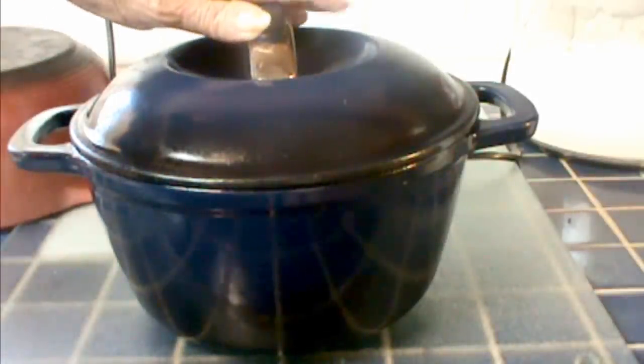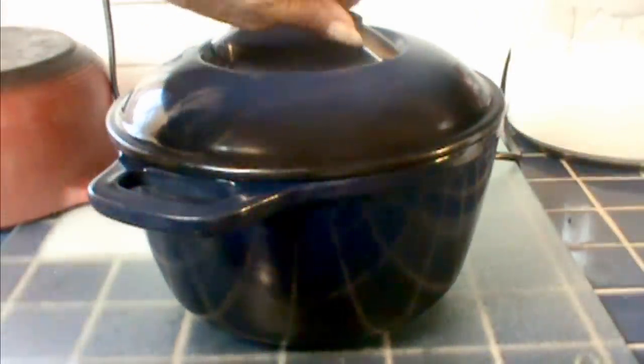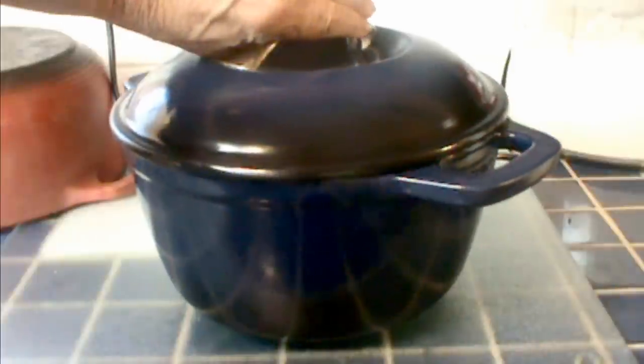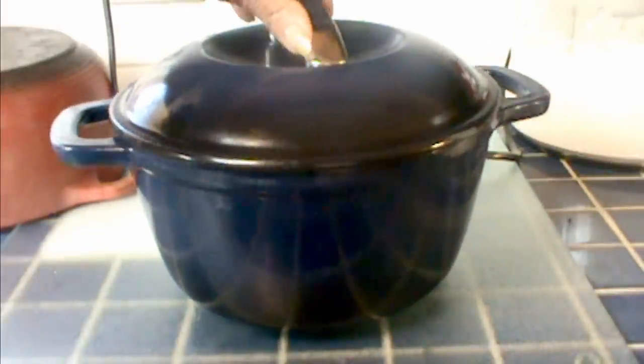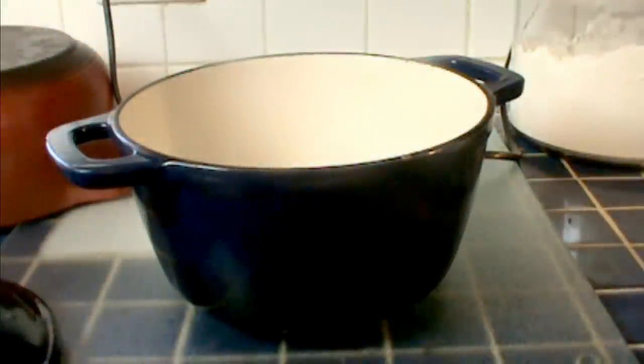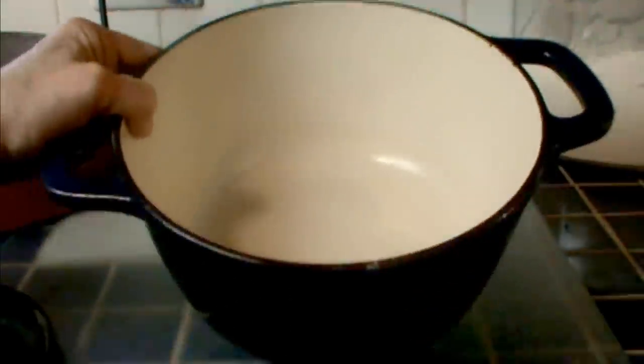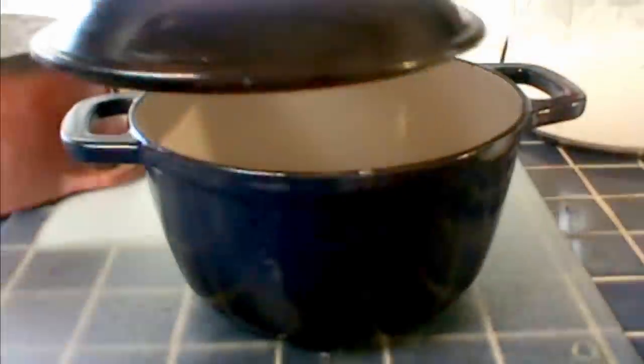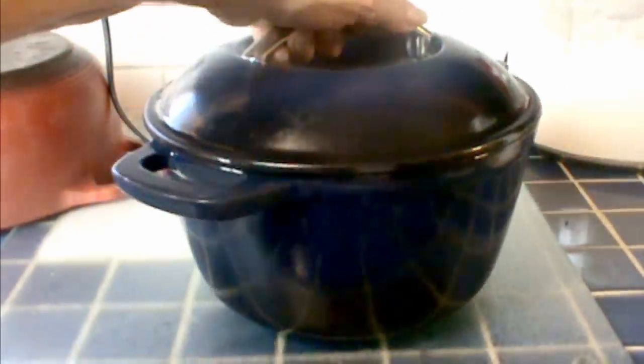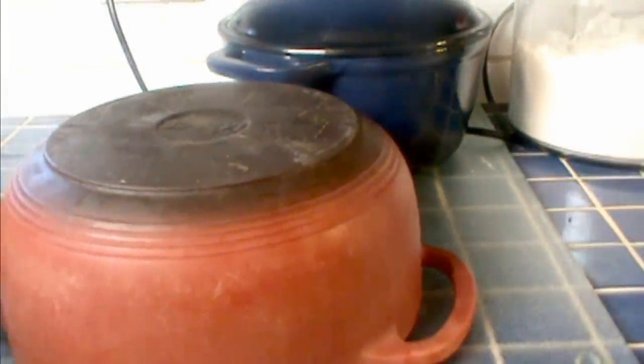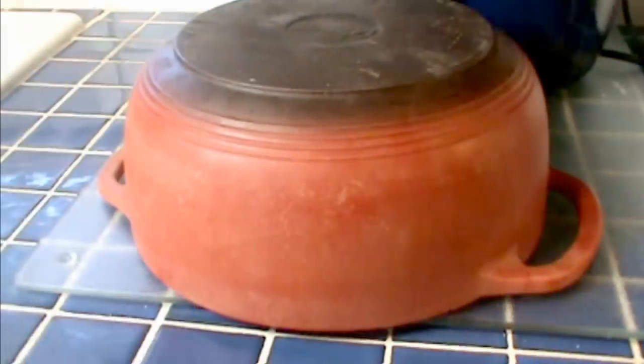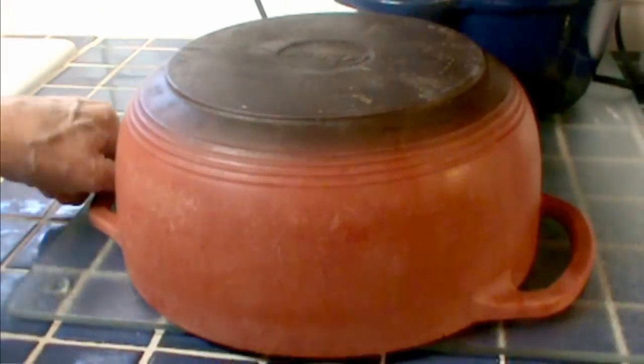I started with this one. This one is KitchenAid Enameled Cast Iron. This pot is, well, I tried to add it up, and I think it's 12 years old, but it could be 14. My memory's not too clear on it. I've had it a long time. And this is the inside too. And this one I've done my regular monthly cleaning of. I didn't show it to you before. I didn't think about it. But I'm going to show you the same process with this.